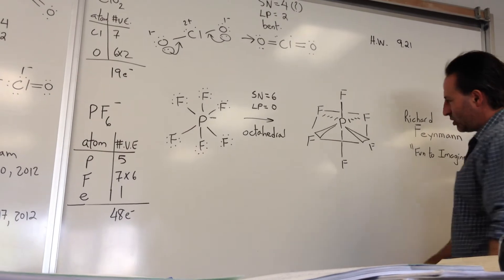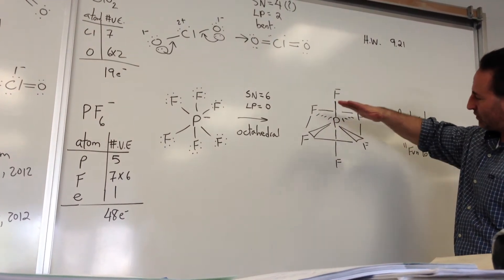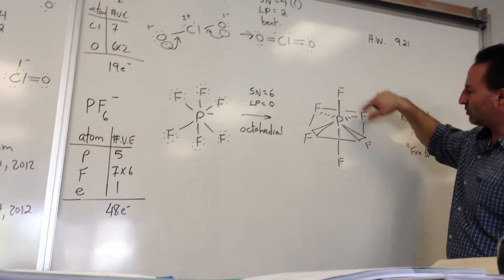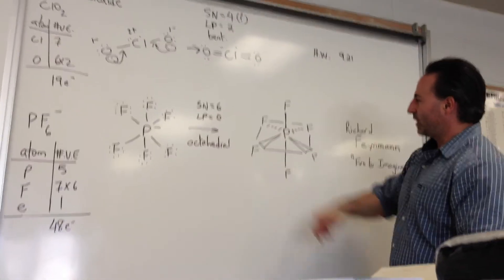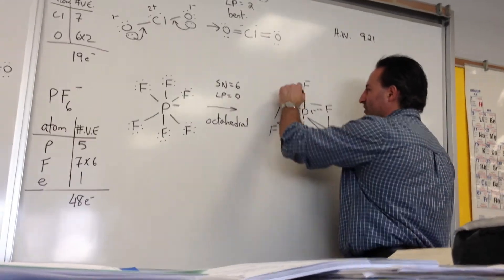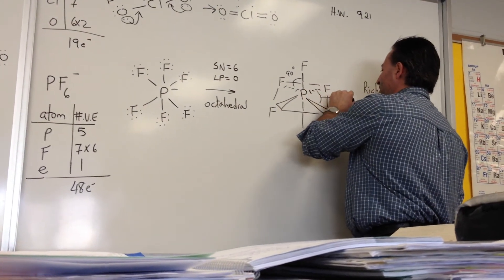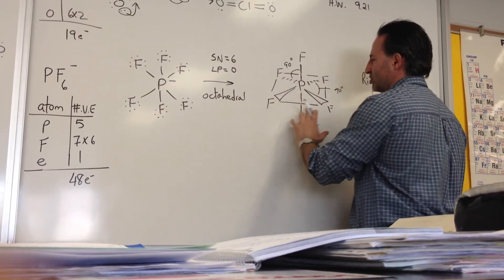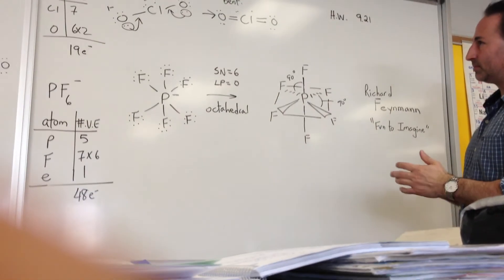When you draw it, you can see it has a square plane where four fluorine atoms are arranged at 90-degree angles from each other, and then there's one oriented up and one oriented down — all angles are 90 degrees. Be aware that the lines in the diagram are not bonds; they are perspective lines to show the geometry of the molecule.